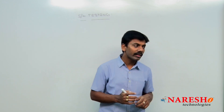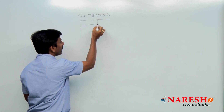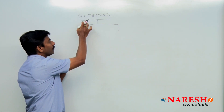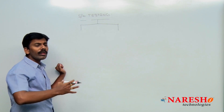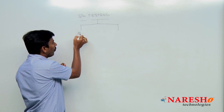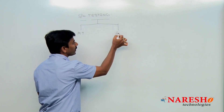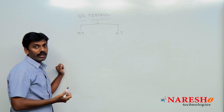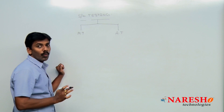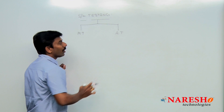While doing the testing, we have two types or two approaches in general. To implement software testing, we can follow two approaches. One is manual testing and the other is automation testing. To perform testing activities, one approach is manual testing and another approach is automation testing.